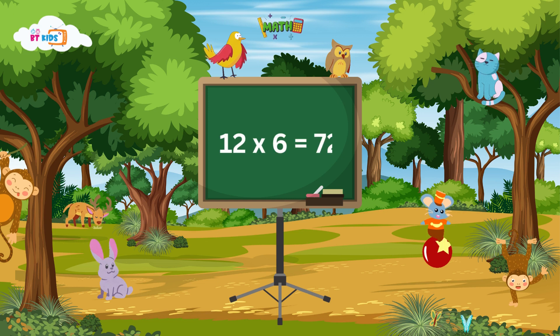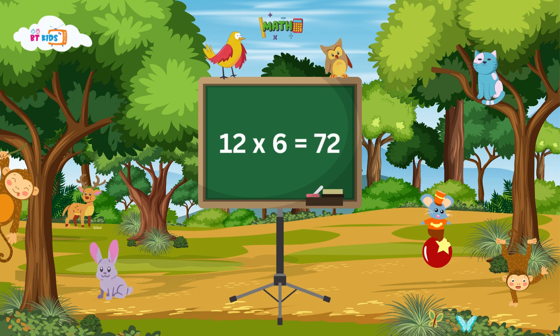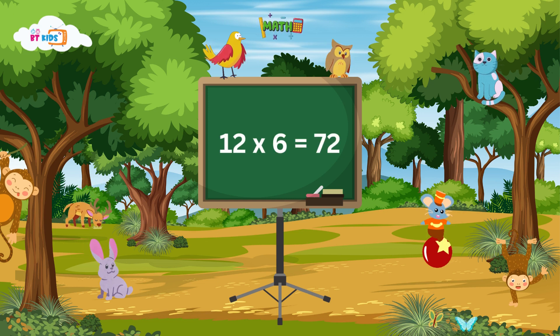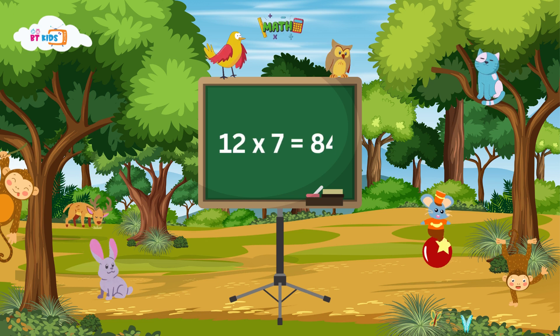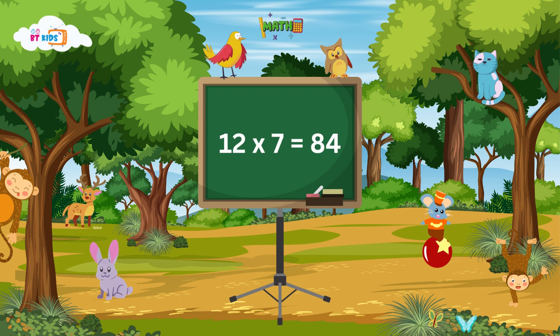Twelve sixes are seventy-two. Twelve sevens are eighty-four.